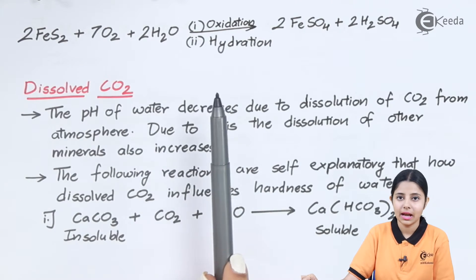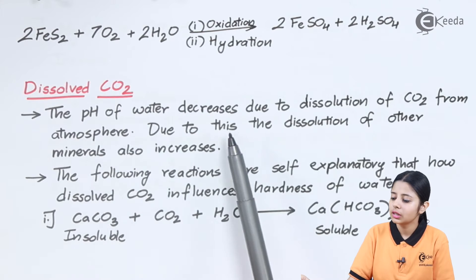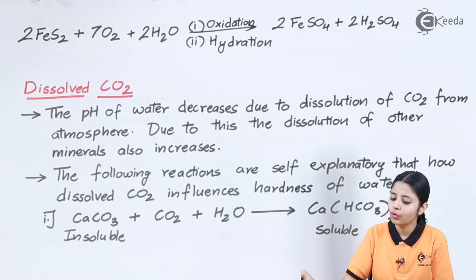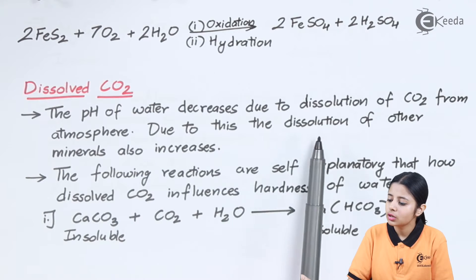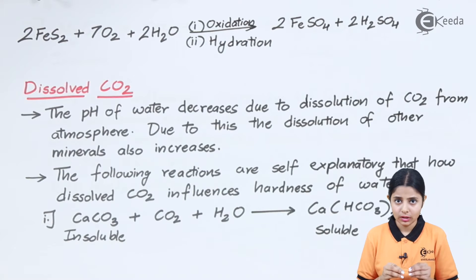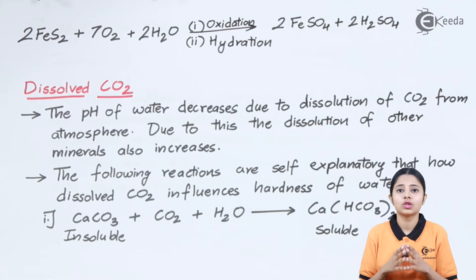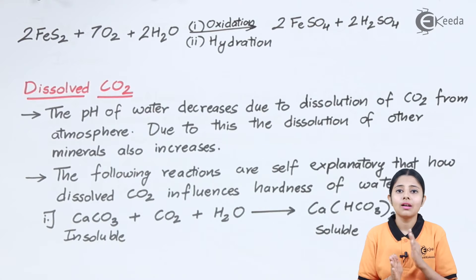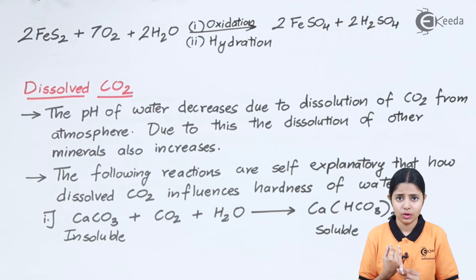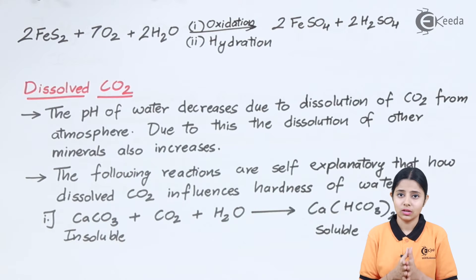Moving on to dissolved CO2: the pH of water decreases due to dissolution of CO2 from the atmosphere. Because of this, the dissolution of other minerals also increases. CO2 itself is an impurity, but beyond that, it also enhances other impurities and helps them dissolve. That is why CO2 is one of the major factors influencing the hardness of water.